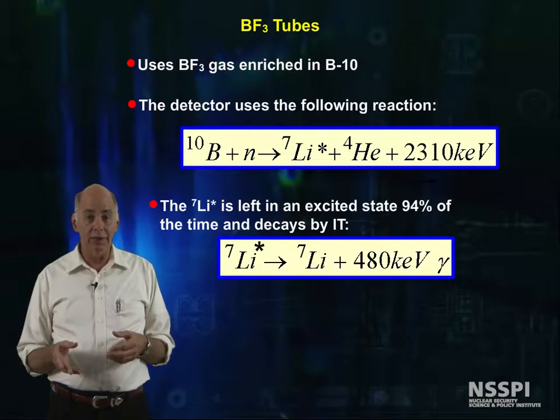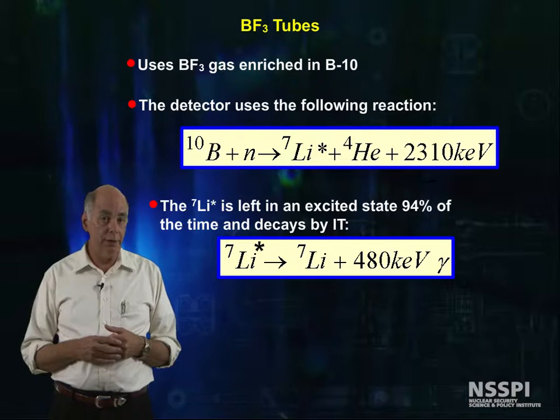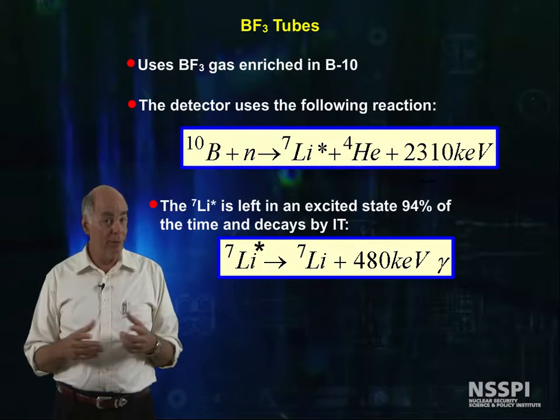2,310 keV appears as prompt kinetic energy in the products. The excited lithium-7 decays from this excited state by emitting a 480 keV gamma ray sometime later.